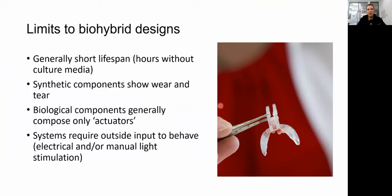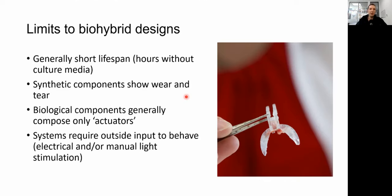Biohybrids have some limitations. Generally there are short lifespans if they're not based in some sort of culture media — the cells have a high energy dependence and without food they die over time. The synthetic components can also show wear and tear, so if one of the limbs of the scaffold breaks off, you cannot regenerate it and you lose function quickly. The biological components in these biohybrids are also generally limited to actuators — your motor is biological with typical contractions, but the biology isn't being used for much else, like the rich biosynthetic pathways we know cells have.